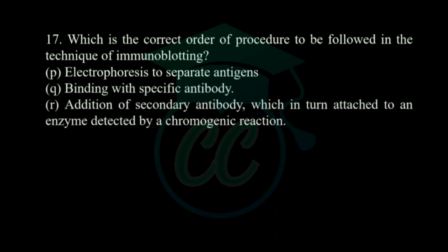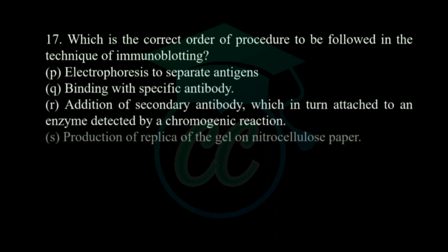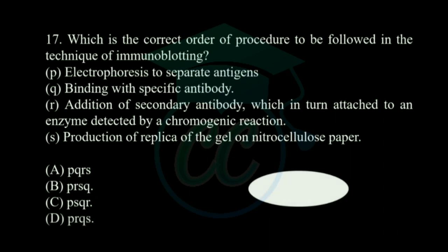For immunoblotting, the correct order of procedure is option C: first, electrophoresis to separate antigen; next, production of replica on nitrocellulose paper; then, binding with the specific antibody; and finally, addition of secondary antibody which is attached to an enzyme detected by chromogenic reaction. The correct order is P, S, Q, R — option C.